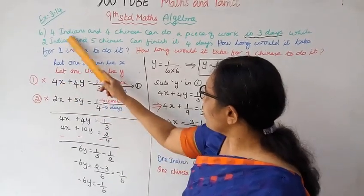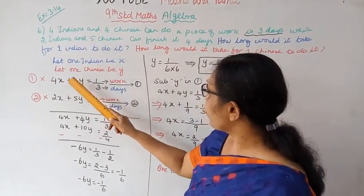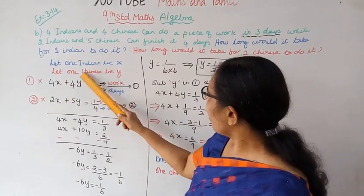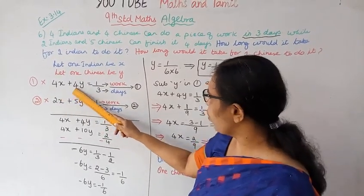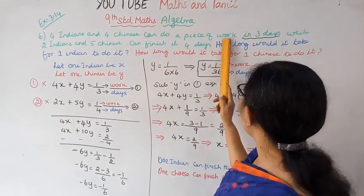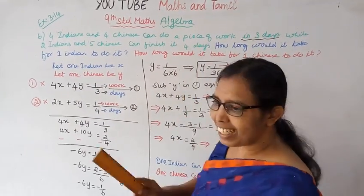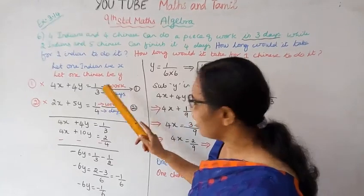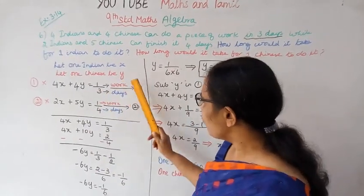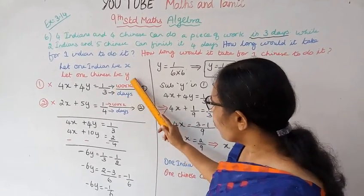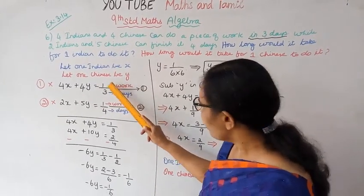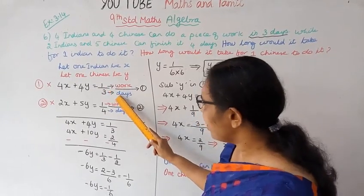4 Indians would be 4x. 4 Chinese would be 4y. So 4x plus 4y can do a piece of work in 3 days. This means 4x plus 4y equals 1 work divided by 3 days. Work divided by days gives us the equation.